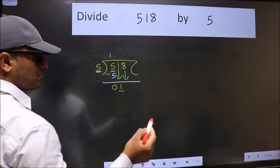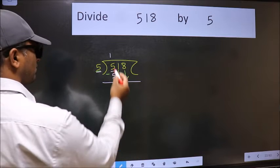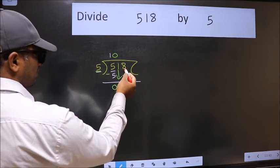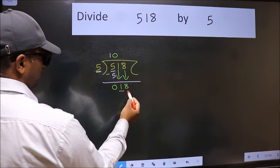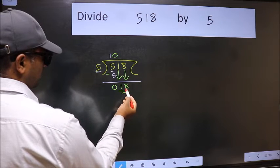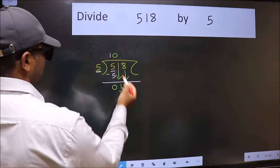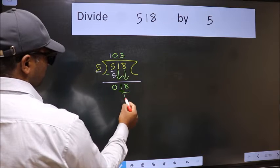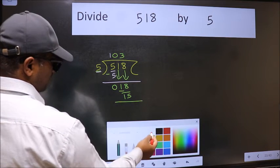The rule to bring down the second number is we should put 0 here, then only we can bring this number down. Now 18 - a number close to 18 in the 5 times table is 5 times 3 equals 15. Now we subtract.